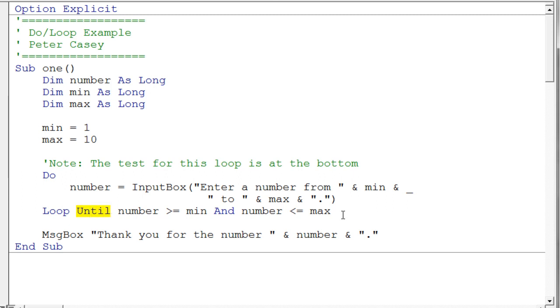You'll notice I have this keyword until here. It's saying do the loop until this test becomes true. So when you use the until keyword, you then have to follow it up with a test that at some point in time is going to be true.